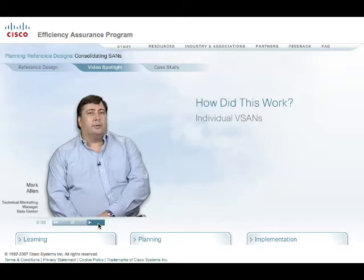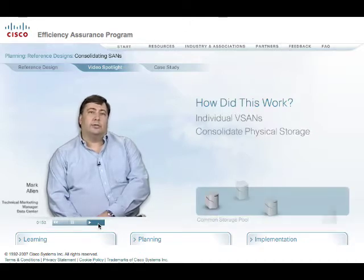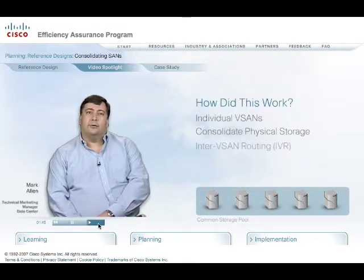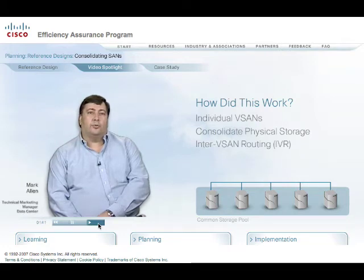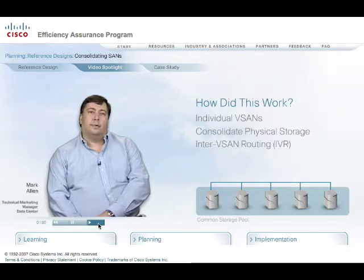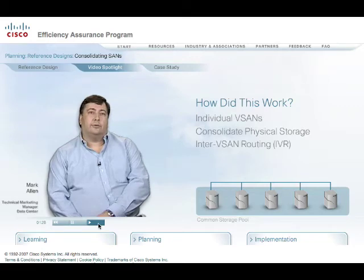The second step was to consolidate all the physical storage into a common storage vSAN. Then, using inter-vSAN routing, or IVR, access to the common storage pool is given to the servers for each functional group. Using these components in conjunction with each other allows the storage administrator to homogenize storage assets and also to provide tiered levels of storage.